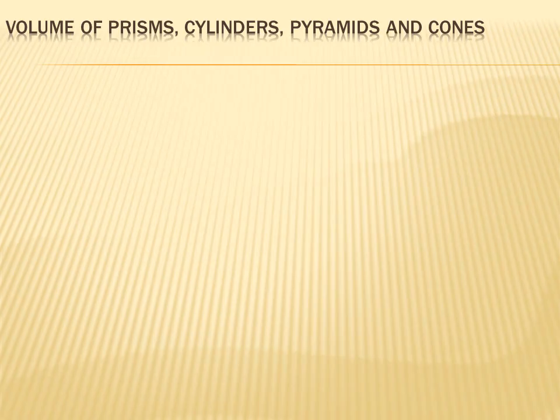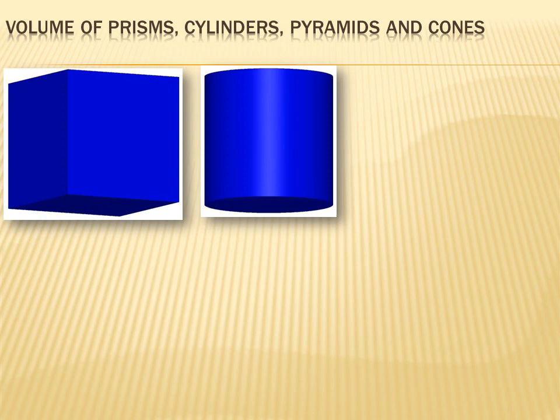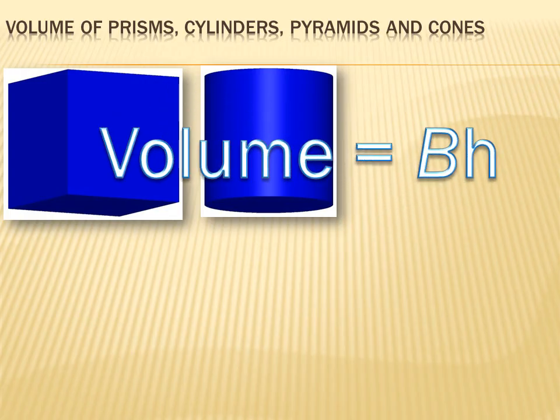We're going to talk about four different kinds of figures. We're going to talk about a prism, and we're going to talk about a cylinder. Both of these shapes have two bases that are pretty much identical on either side of the shape, and then they're filled in with lateral sides. The formula for the volume of either a prism or a cylinder is the area of the base, which we've denoted here as capital B, times the height.